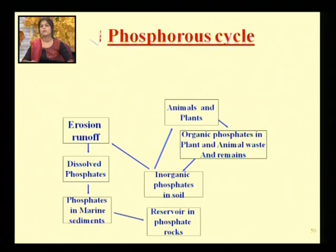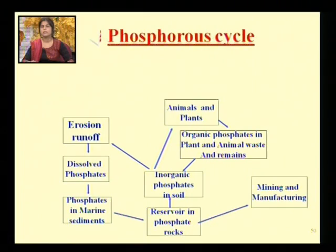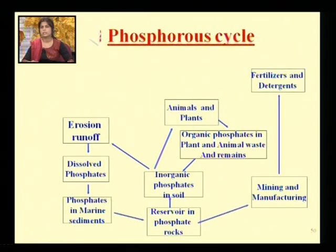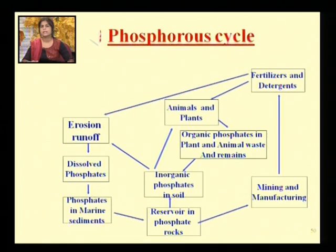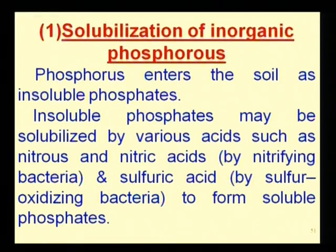Organic phosphates can also undergo soil erosion, dissolve, and become part of marine phosphates. These marine phosphates get sedimented as reservoir phosphate rocks at the depths of marine environments. These phosphates are often mined for manufacturing fertilizers and detergents. Fertilizers are used by plants, and the phosphorus from detergents and fertilizers again undergoes soil erosion, re-entering the marine environment.